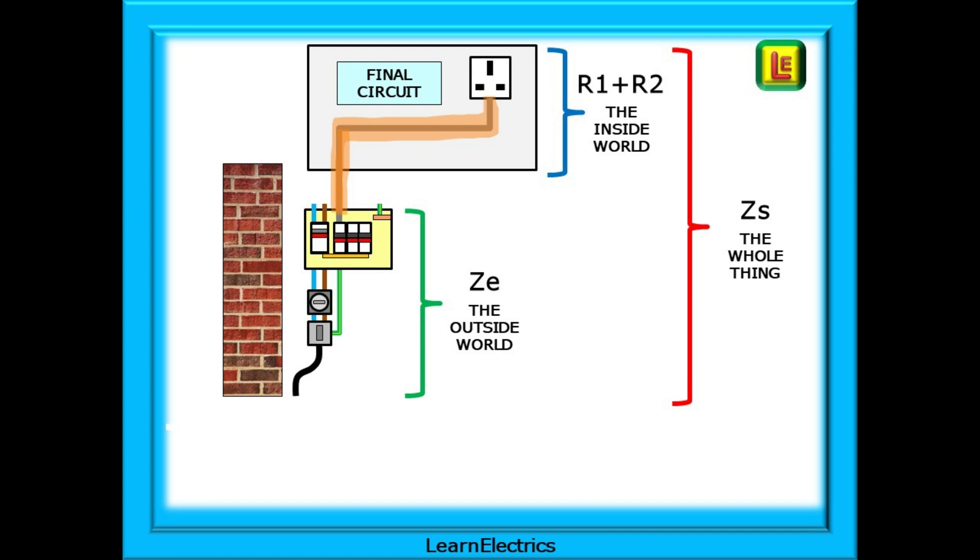Think of the final circuit as the final length of cable from the consumer unit to the point of use. The final stage of the electricity's long journey from the power station to the point of use. Notice that with the final circuit there are no more circuit breakers or fuses to go through and we don't count BS 1362 plug top fuses or FCU fuses.